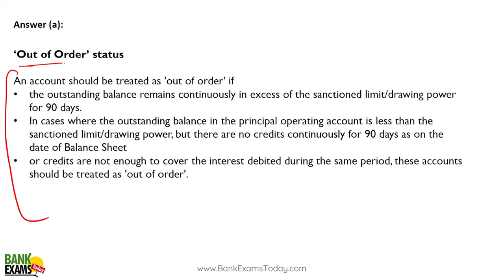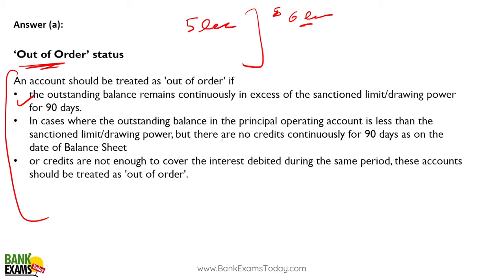When does an account become out of order? First, if the outstanding balance remains continuously in excess of the sanctioned limit for 90 days — for example, if the limit is 5 lakh rupees and the balance remains at 6 lakh rupees for 90 days, it is out of order.